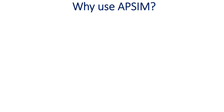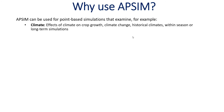There are a number of different functions for which you can use APSIM, and the idea of this webinar is to be as brief as possible. So what is it used for? It's used for point-based simulations — it doesn't do regional areas unless you do a bunch of individual points — so it's used for things like climate, effects of climate on crop growth, climate change, and long-term historical climates.